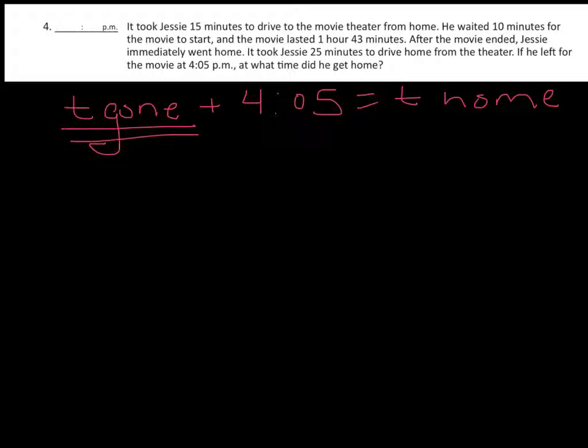So I'm going to add these in hours and minutes. I've got zero hours 15 minutes, then I have zero hours 10 minutes when he waited. Then he went to a movie that lasted one hour and 43 minutes. And then after the movie ended he went home and it took 25 minutes. So zero hours 25 minutes.